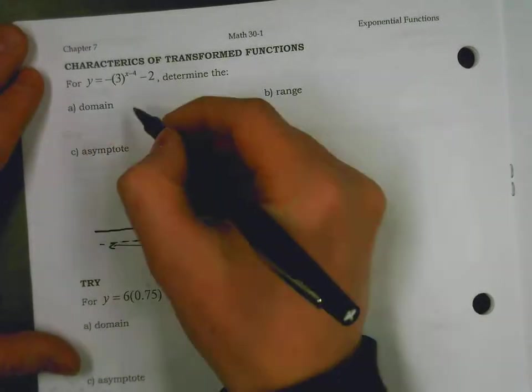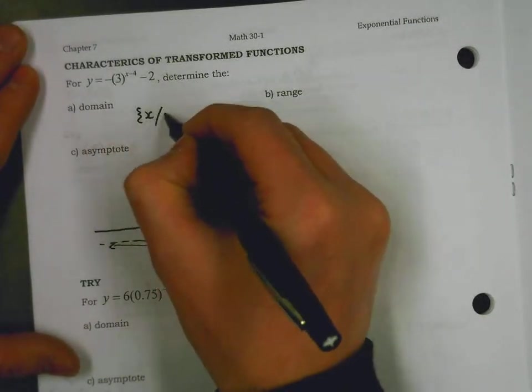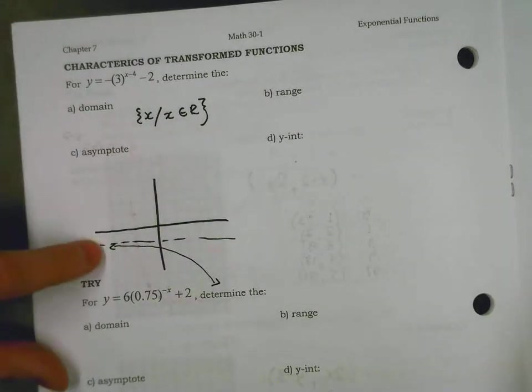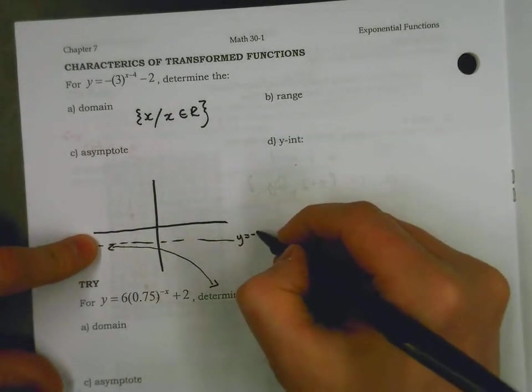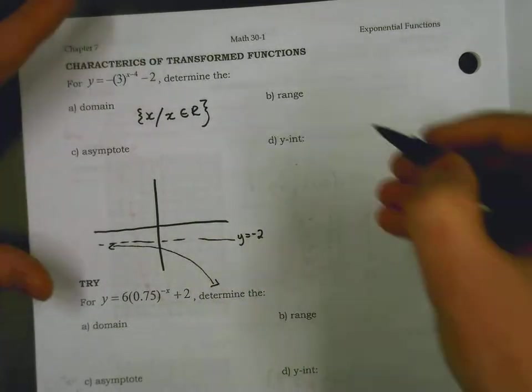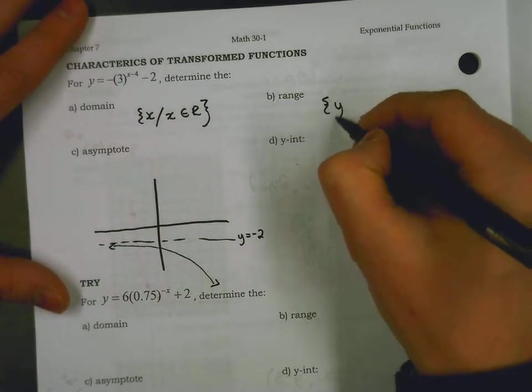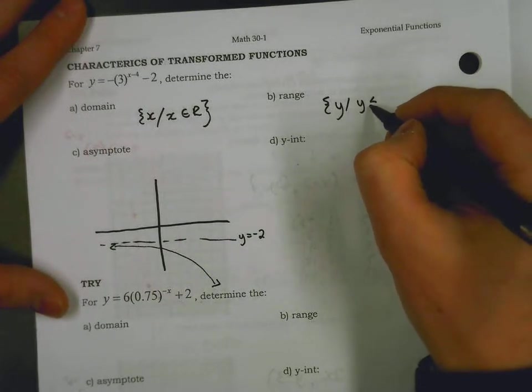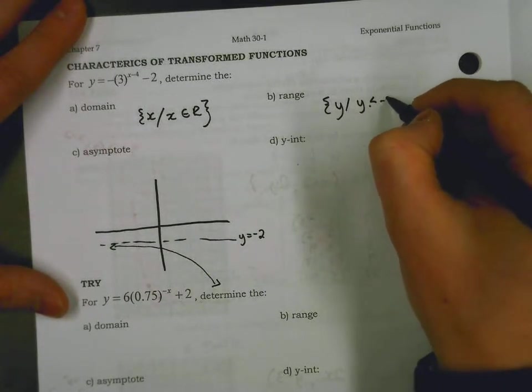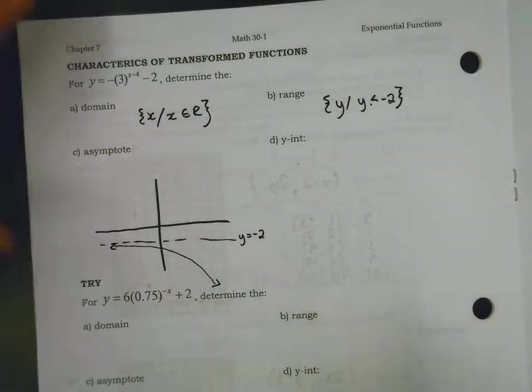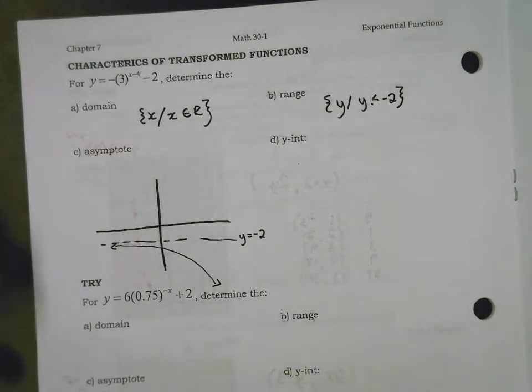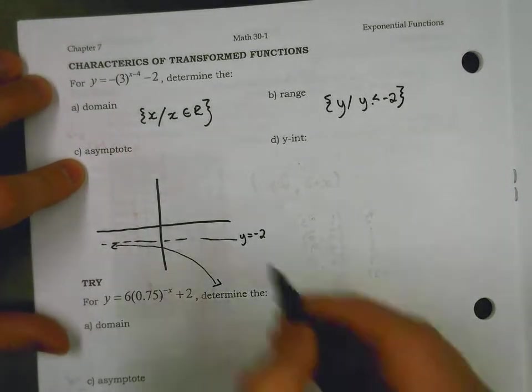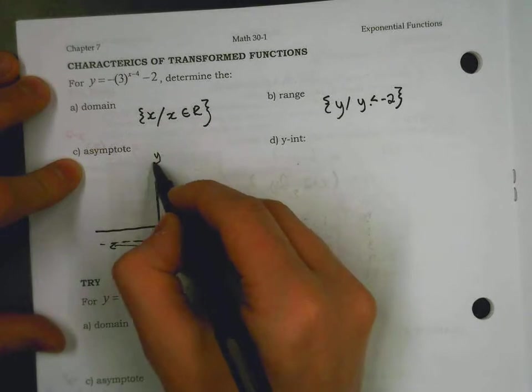I know that this still goes forever left, forever right. So as a domain, we can say x is such that x is an element of the real number system. As a range, I see everything is below this y value of negative 2 that we shifted down to. So I can say that the y values are such that y values are less than, or not or equal to, just less than negative 2, and every element of the real within that. Your asymptote, there is a horizontal asymptote that exists at y equals negative 2.